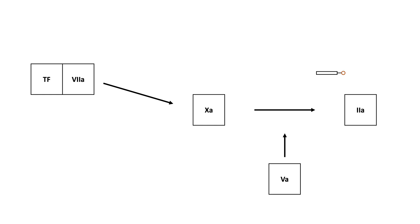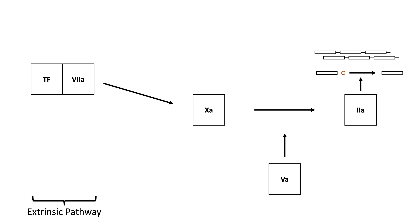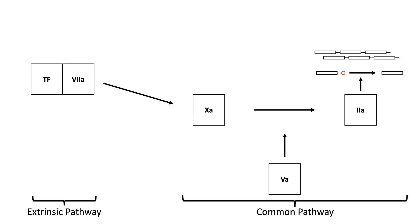Thrombin converts fibrinogen to fibrin, and fibrin monomers combine into fibrin strands, which are cross-linked by factor XIII to produce a strong fibrin clot. The first part of the cascade involving tissue factor and factor VII is historically known as the extrinsic pathway. The rest is known as the common pathway, which is common to both the intrinsic and extrinsic pathways.